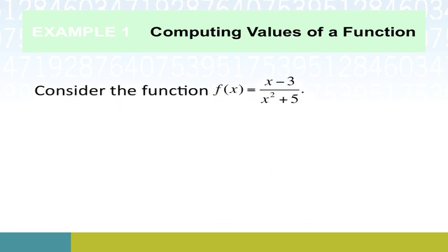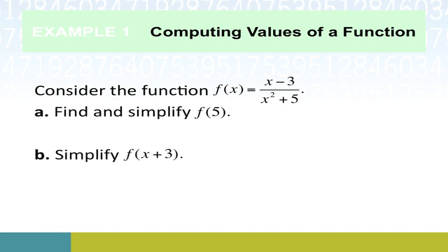So, a slightly more involved example. This function is, as you can tell, more complicated than the one we had before, but it's similar in that it's defined by some expression. x minus 3 in the numerator, x squared plus 5 in the denominator, we divide those two things. So we have a few tasks here. Find and simplify f of 5 is our first one. Next, simplify f of x plus 3. And finally, we'll find the domain of this function.